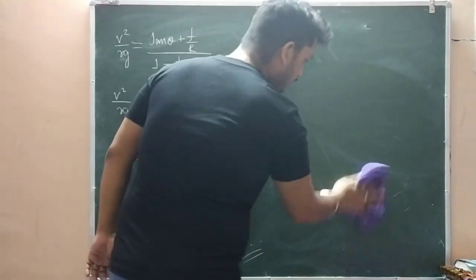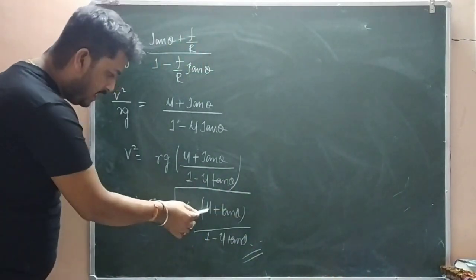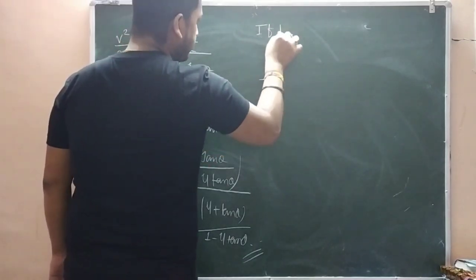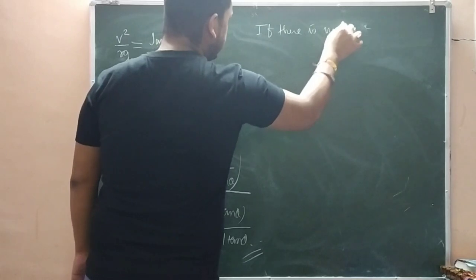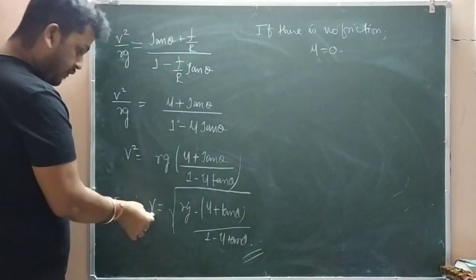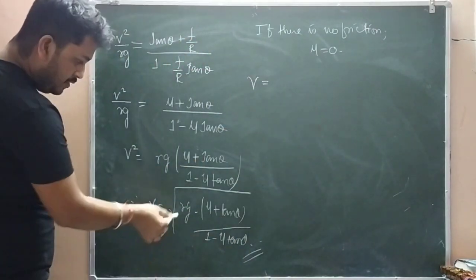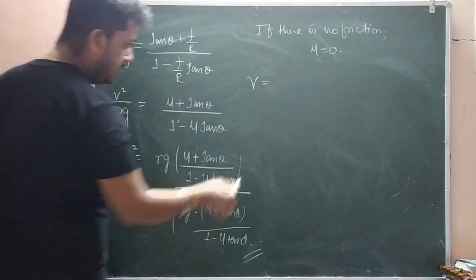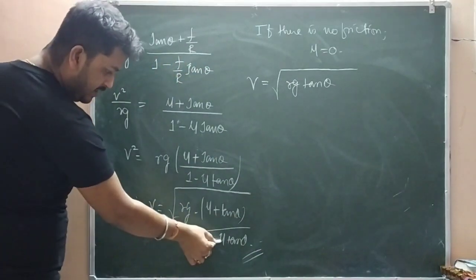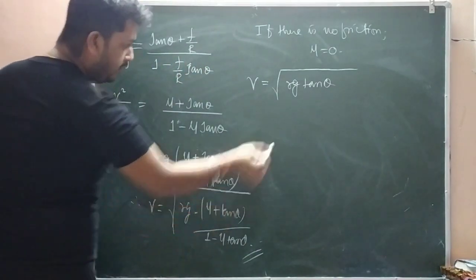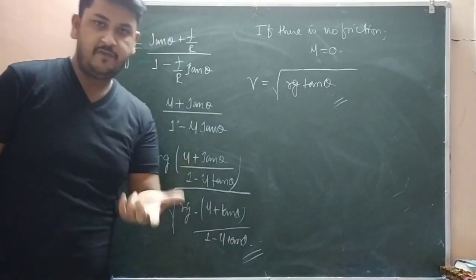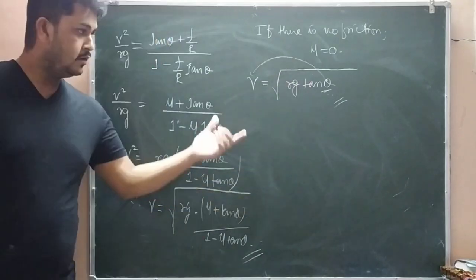Now, special condition: if there is no friction. If there is no friction, then μ will become zero. Then v equals - this becomes zero, so root rg tan θ remains, and this also becomes zero, so 1 minus 0 divided by 1. So when there is no friction, the safe velocity of the car is v equals root over rg tan θ.